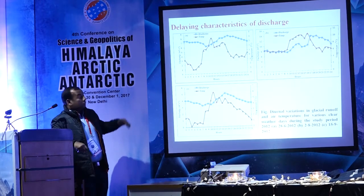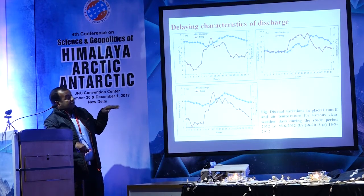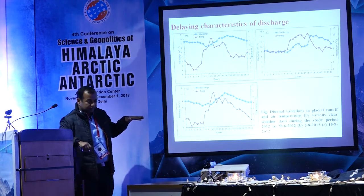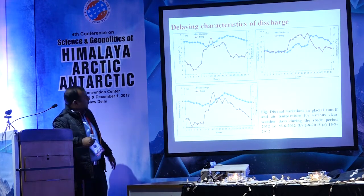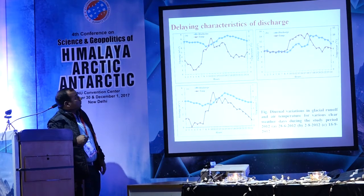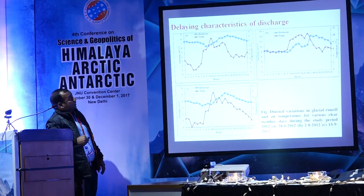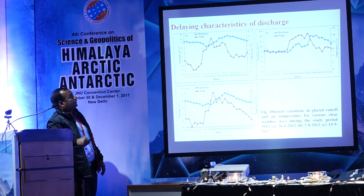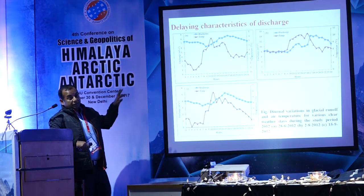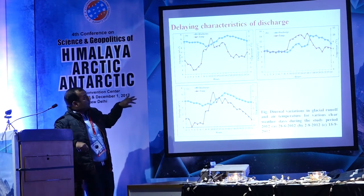In a glacial environment there is a time lag between the generation of melt water over the surface of the glacier and its runoff from the snout. If you see the diagram, at the beginning of the melt period there is a time lag of around six hours between maximum temperature and maximum discharge. During the peak melt period, the time lag reduces to around one hour. So the time lag is high during the beginning of the melt period and very low during the peak melt period.